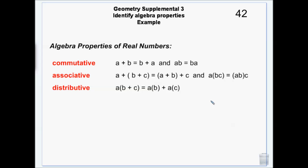Commutative property — if you think about your commute, you go from home to school and back. That's all commutative property is: we change the direction, we change the order. It doesn't matter what order we add in — 2 plus 3 is the same thing as 3 plus 2. And 4 times 5 is the same thing as 5 times 4. Commutative property is only true for addition and multiplication. For subtraction and division the order matters — 3 minus 2 is not the same thing as 2 minus 3.